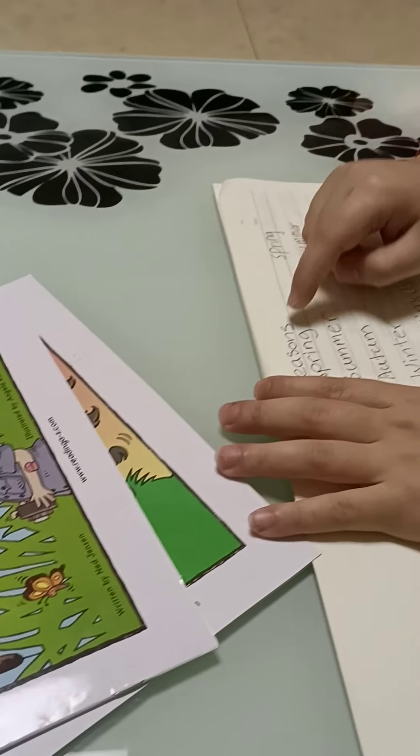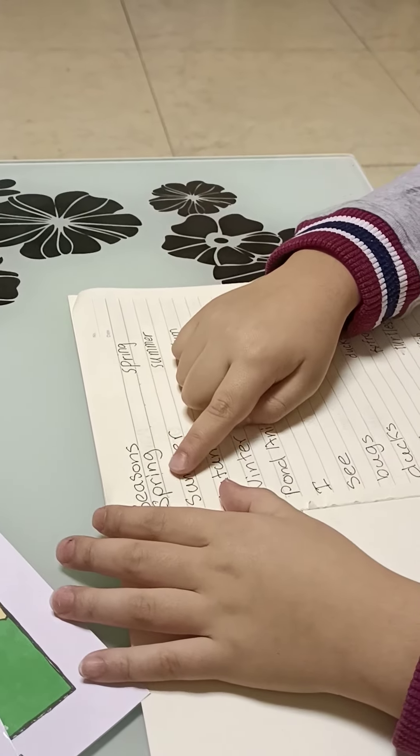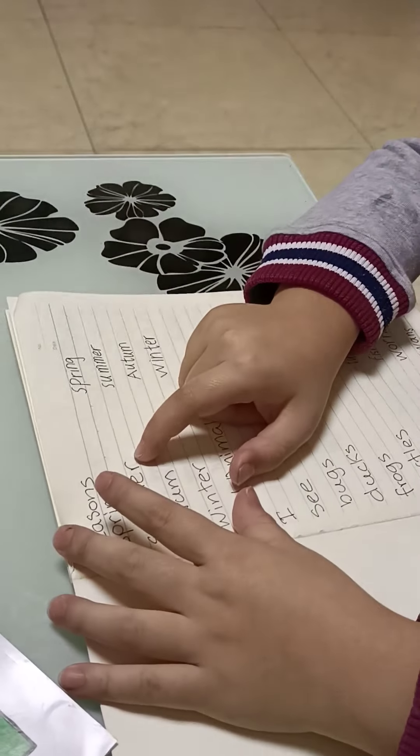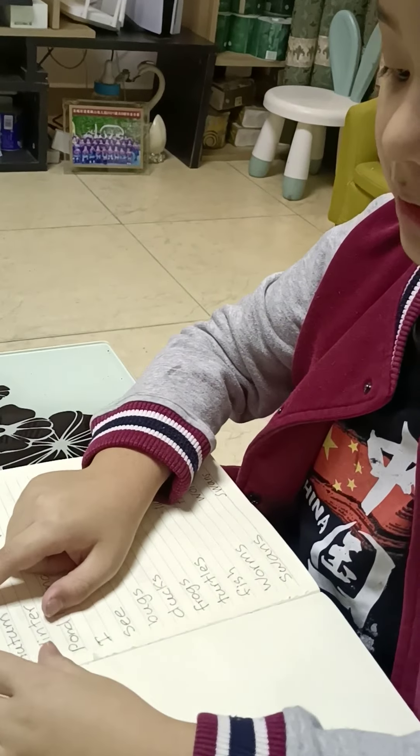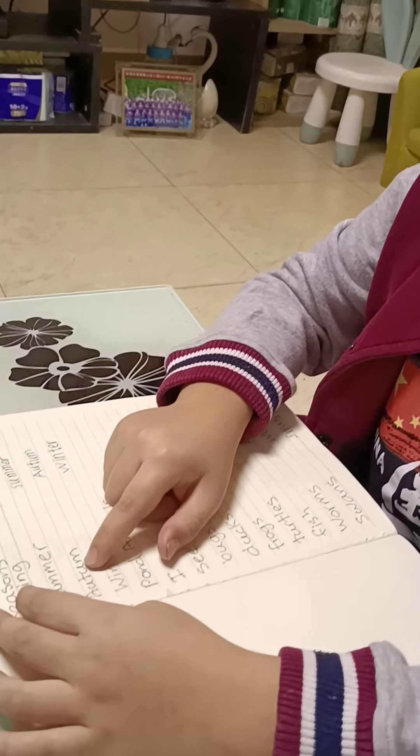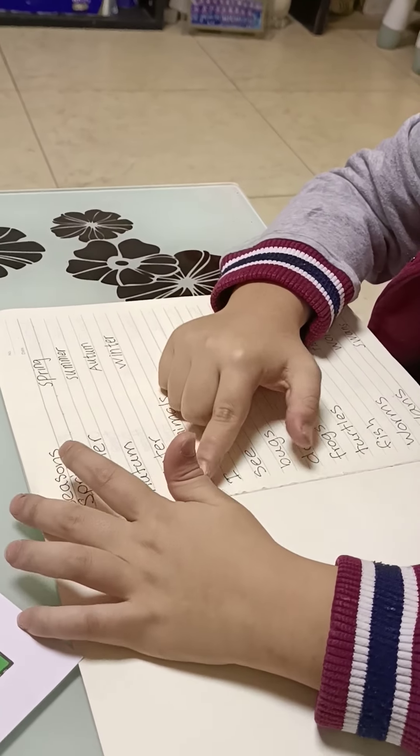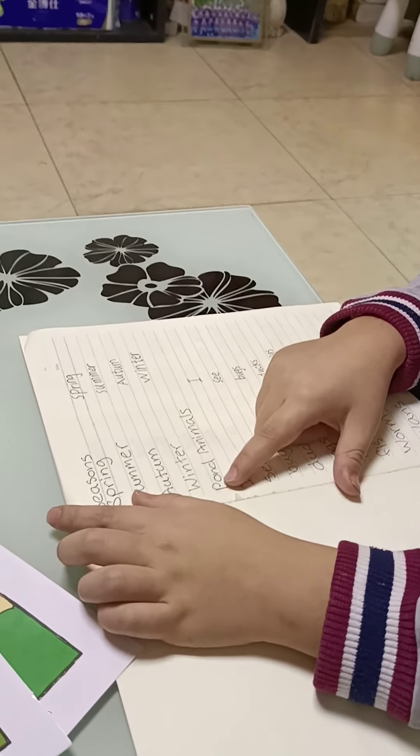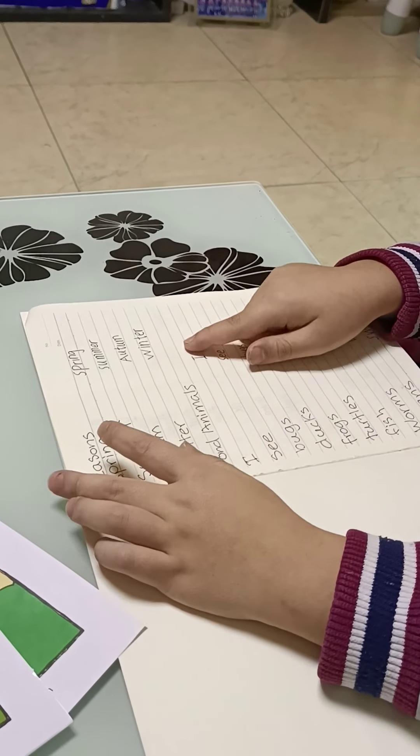Season, seasons. Spring, spring. Summer, summer. Autumn, autumn. Winter, winter, winter, pond, pond animals.